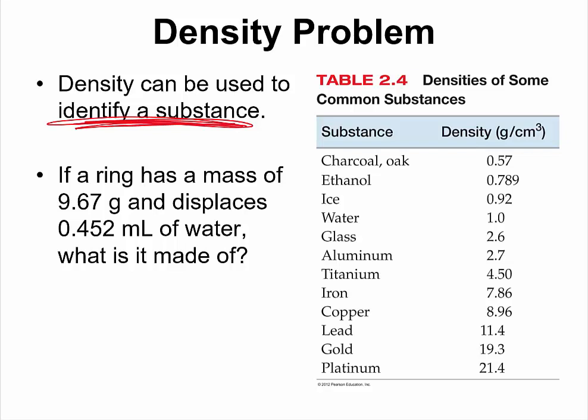If a ring was bought, let's say a wedding ring, and you are not sure whether the wedding ring is made of the right materials. So, you bought the ring and you place it on a weight balance, you found out that the ring has a mass of 9.67 grams. And then you dropped the ring in water and it displaces 0.452 milliliters of water. What is the material made up of?